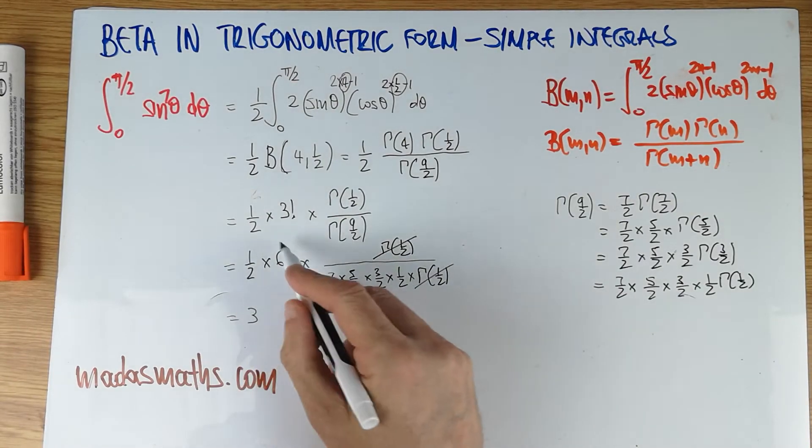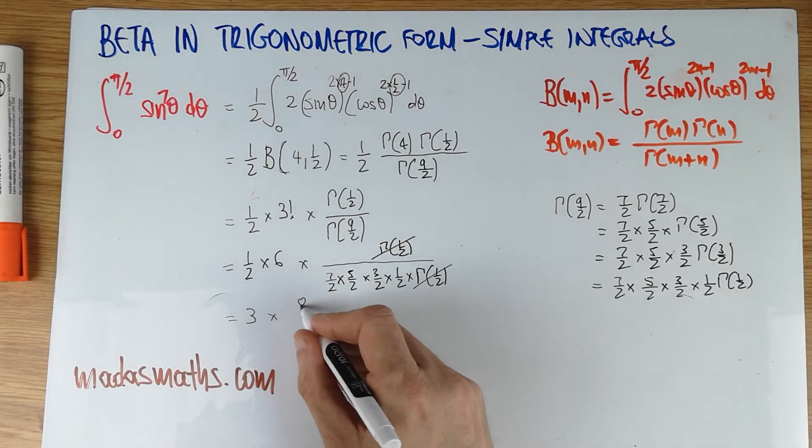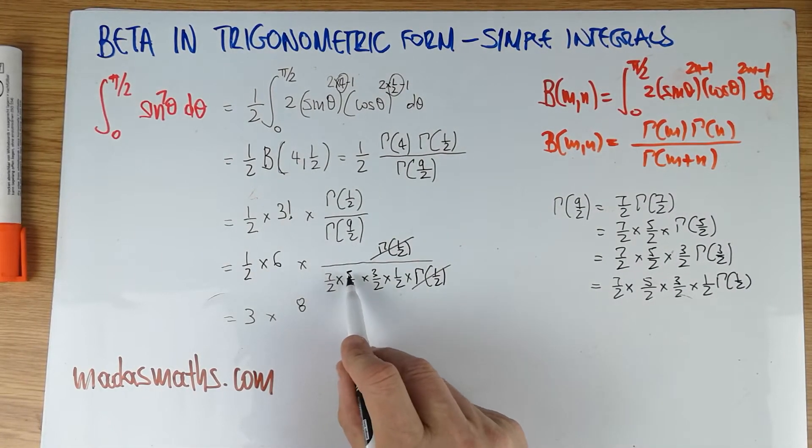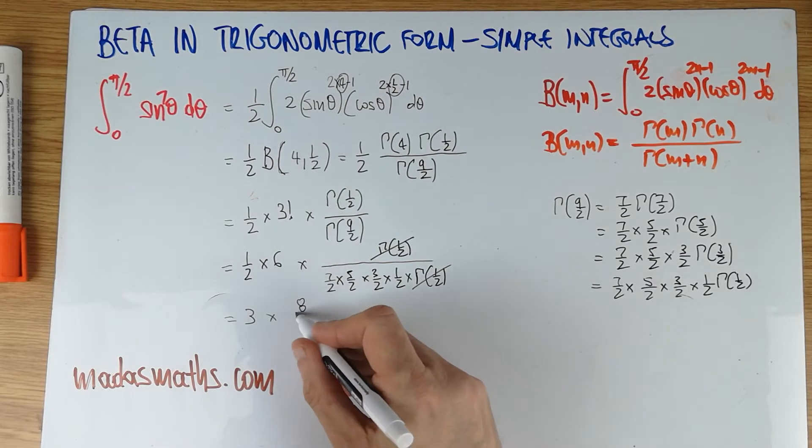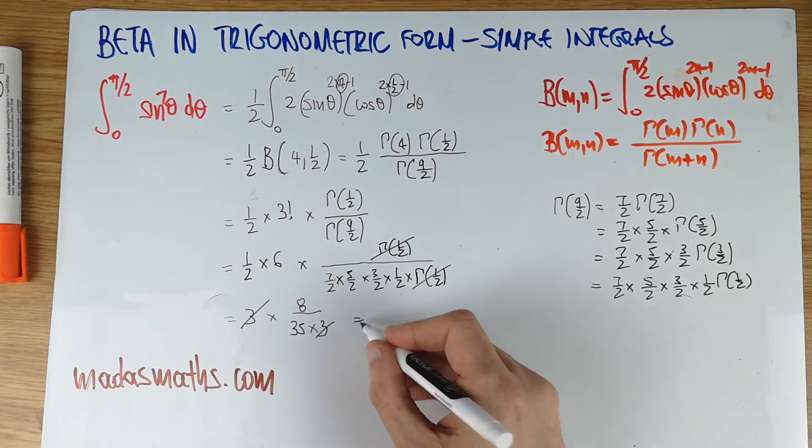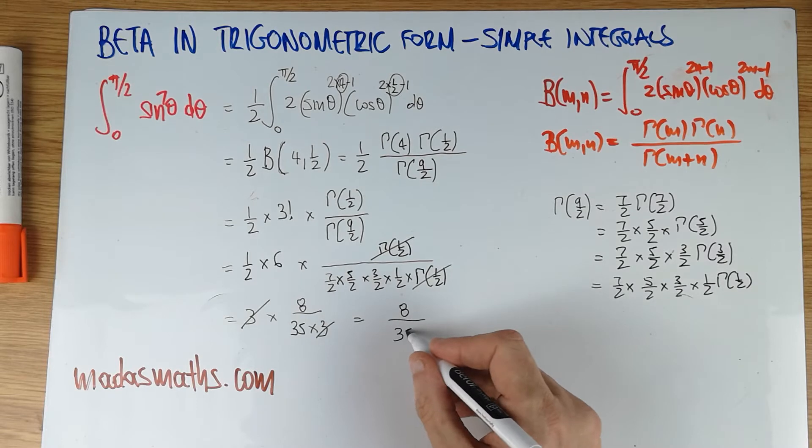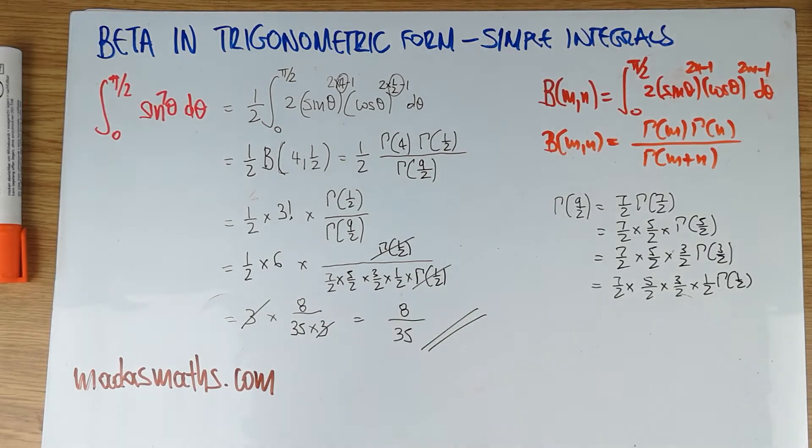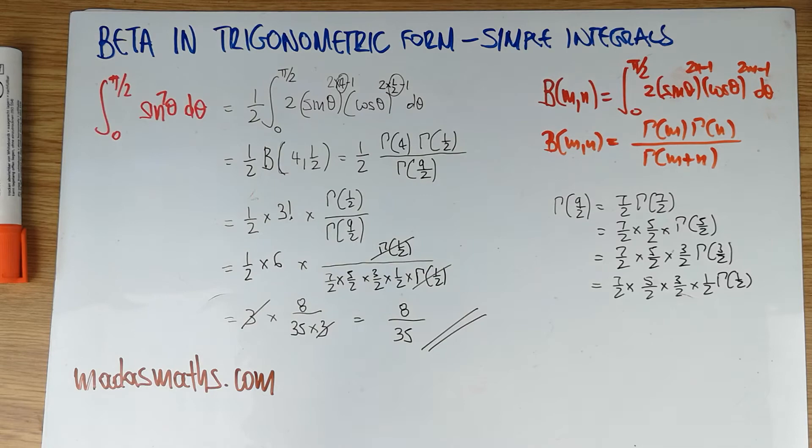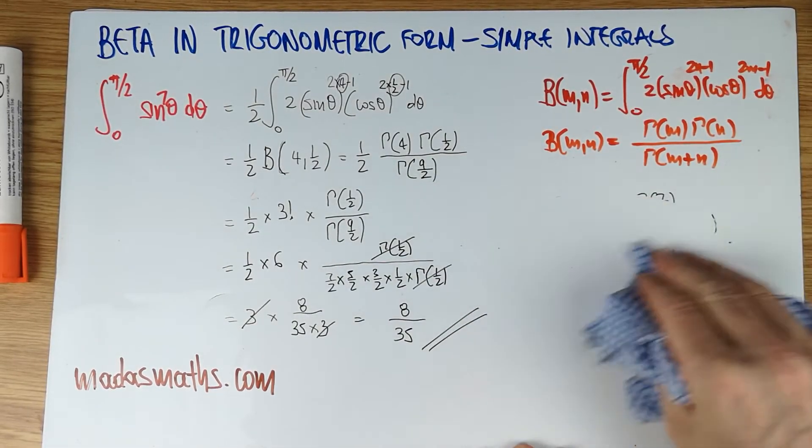And what do we have in here? That's 3, that bit there. And then we've got times 8 on the top. And at the bottom, we're going to have a 5 times 7 times 3. So I'm going to write it as 35, that's this bit here, times 3. The 3 will cancel here. You can use a calculator, I guess, but I very rarely will use one. So the answer is 8 over 35. So very, very simple. I've done a full explanation that for somebody who is proficient in beta and gamma, it's a few lines and maybe 2 minutes maximum.